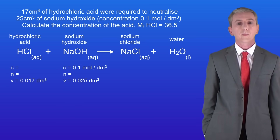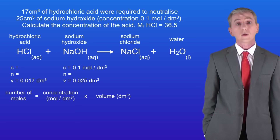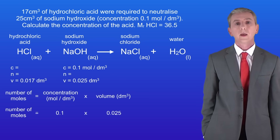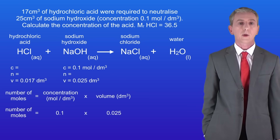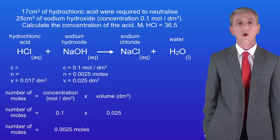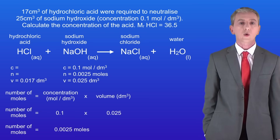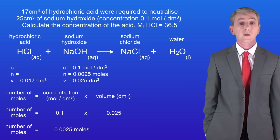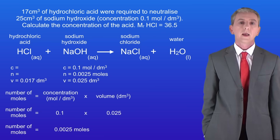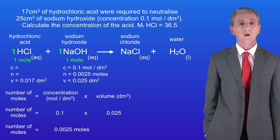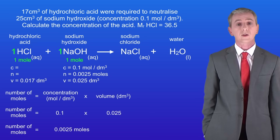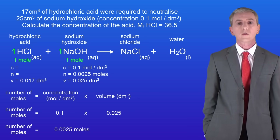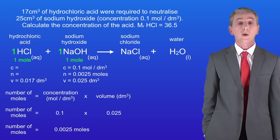Now we calculate the number of moles of the sodium hydroxide solution by multiplying the concentration by the volume. 0.1 multiplied by 0.025 tells us that we've got 0.0025 moles of sodium hydroxide. Looking at the chemical equation we can see that there are no large numbers in front of the acid or the alkali — in chemistry if there's no large number that means one. So one mole of hydrochloric acid reacts with one mole of sodium hydroxide, meaning we must also have 0.0025 moles of hydrochloric acid.